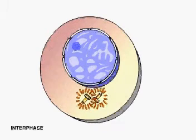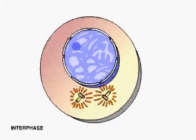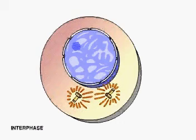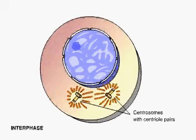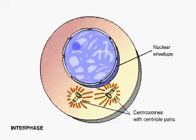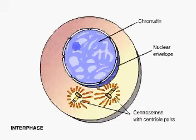The cytoplasm of a cell in late interphase contains two centrosomes, each of which may contain a pair of centrioles. In the nucleus, the chromosomes have been replicated during S phase, but are still dispersed in the form of chromatin. One or more nucleoli are present.